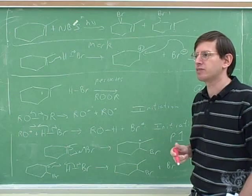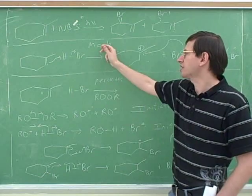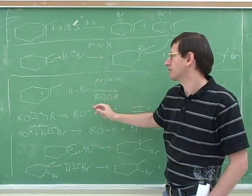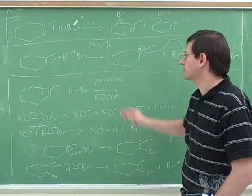Last time we met, we saw some ways to do Markovnikov and anti-Markovnikov additions of alcohols, and now we're seeing how to do Markovnikov and anti-Markovnikov additions of halogens. Non-radical is Markovnikov, and here it's radical.